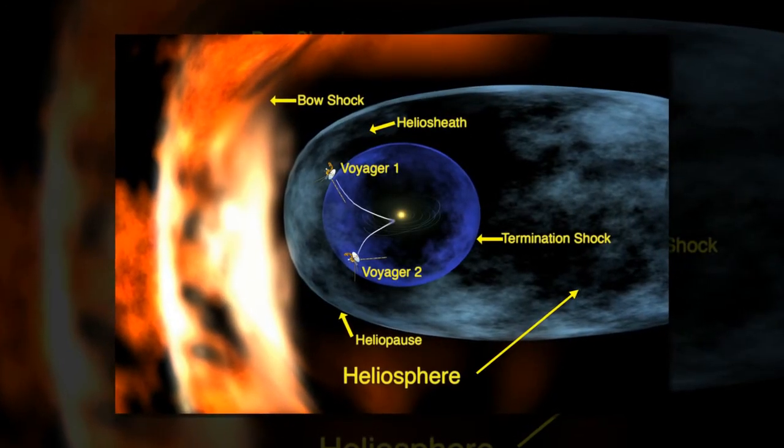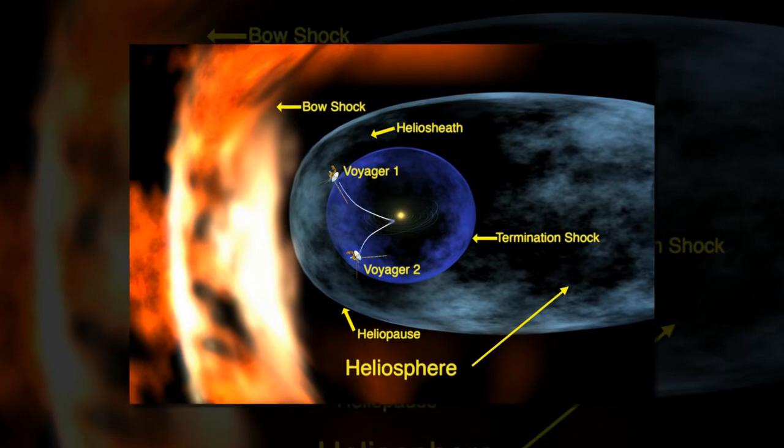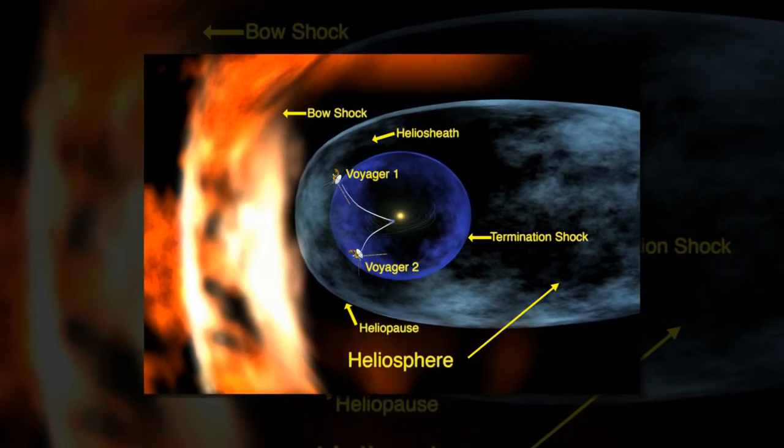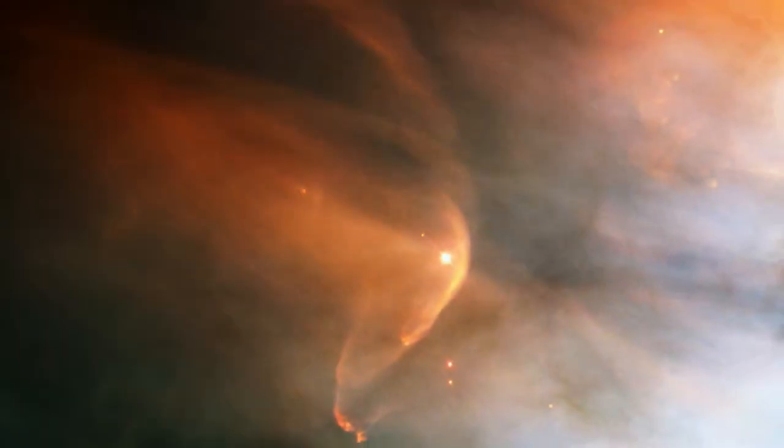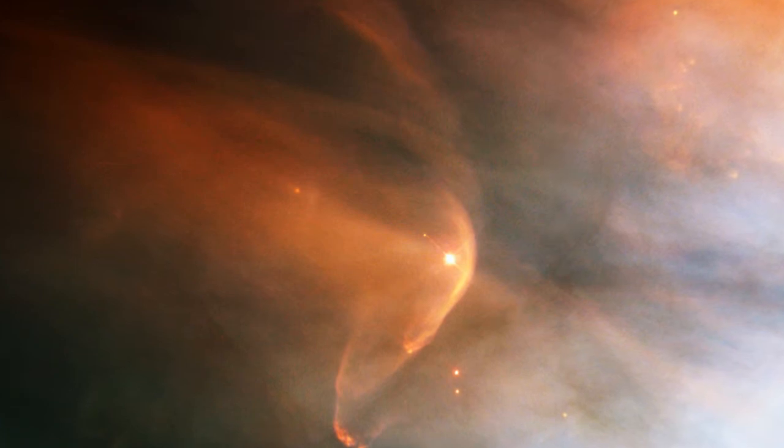The paper, published February 8, 2016, in Astrophysical Journal Letters, precisely determines the strength and direction of the magnetic field outside the heliosphere.